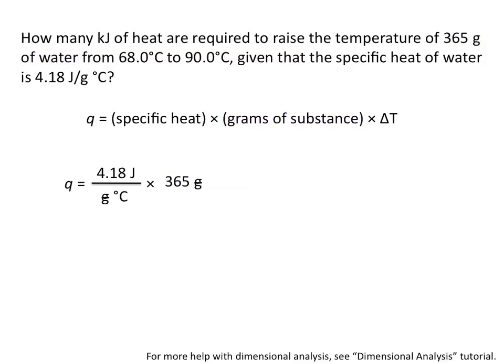Delta T, or the change in temperature, is 22 degrees Celsius. We calculate delta T by taking our final temperature minus our initial temperature: 90 degrees Celsius minus 68 degrees Celsius gives us a delta T of 22 degrees Celsius.